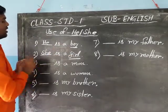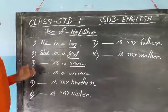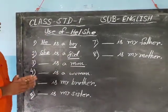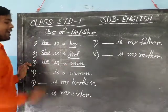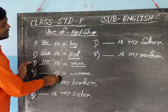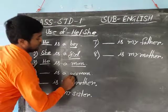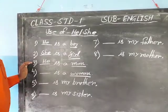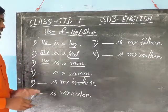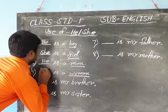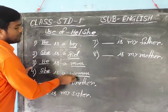Next example: 'That is a man.' Man is a male person, so use 'he': He is a man. Next: 'That is a woman.' Woman is a female person — feminine gender. So write 'she': She is a woman.